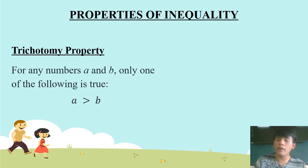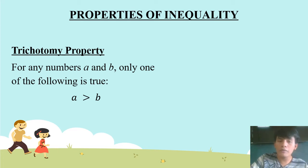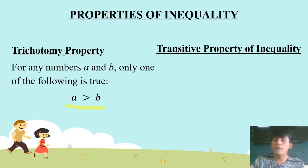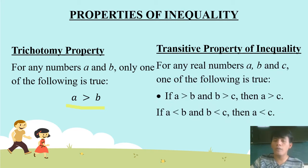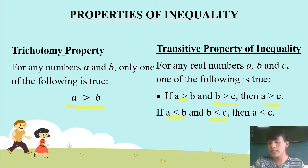Properties of inequality. First: trichotomy property — for any numbers A and B, only one of the following is true; this is known as the trichotomy property. Next: transitive property of inequality — for any real numbers A, B, and C: if A > B and B > C, then A > C; and if A < B and B < C, then A < C.